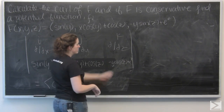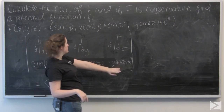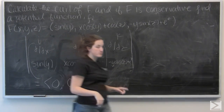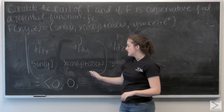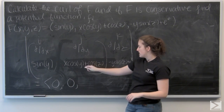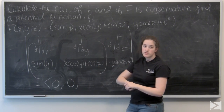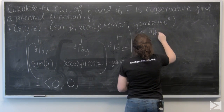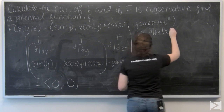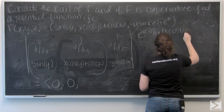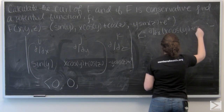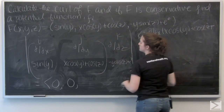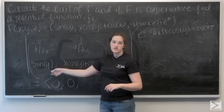Now I'm ready to do k. So cut this column, cut the top row. Determine this 2 by 2 matrix — product of the main diagonal: ddx of x cosine y plus cosine z. And then minus ddy of sine of y.